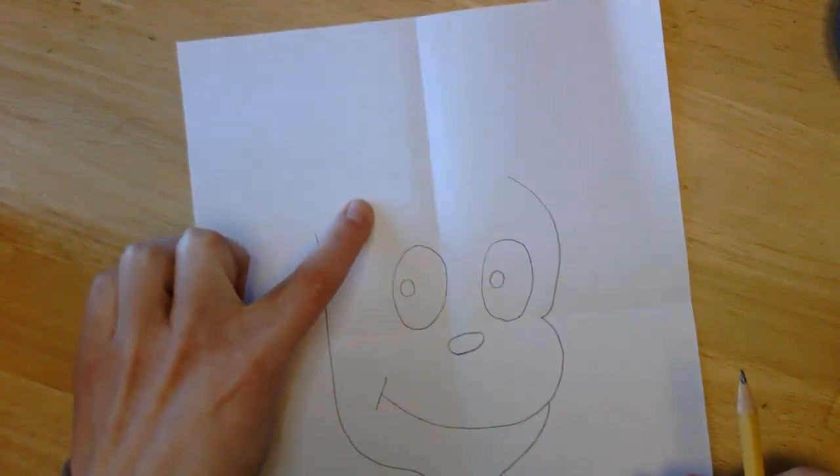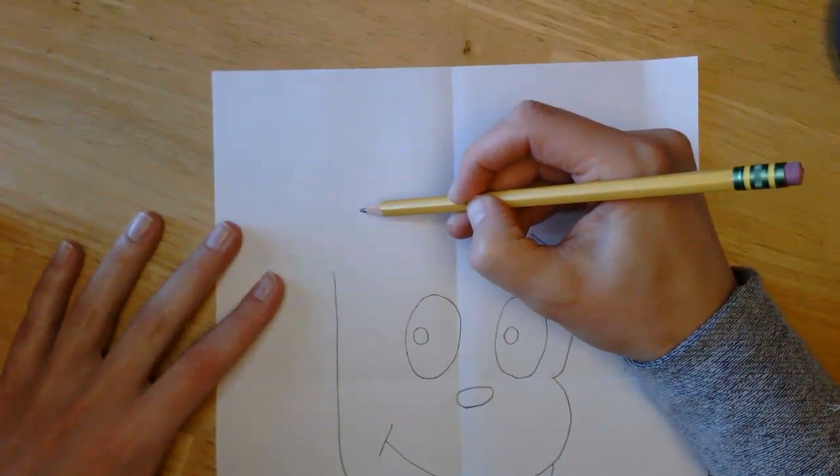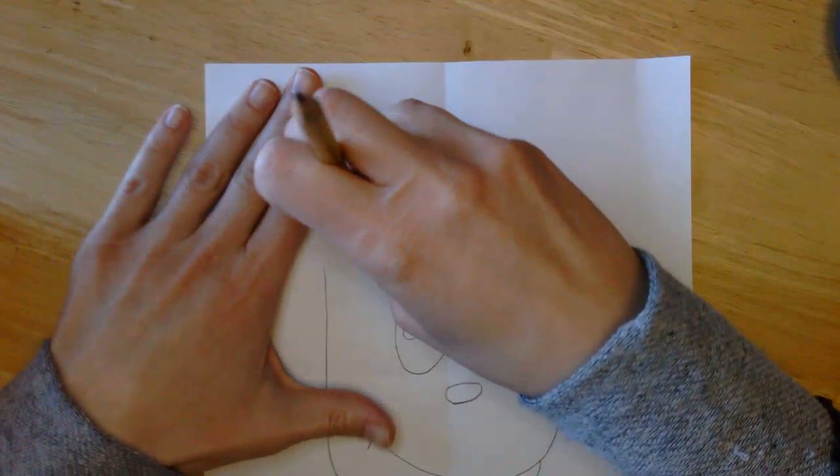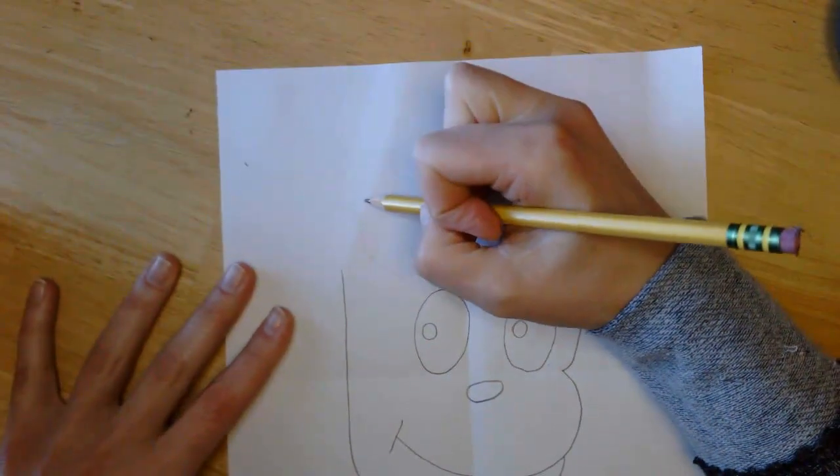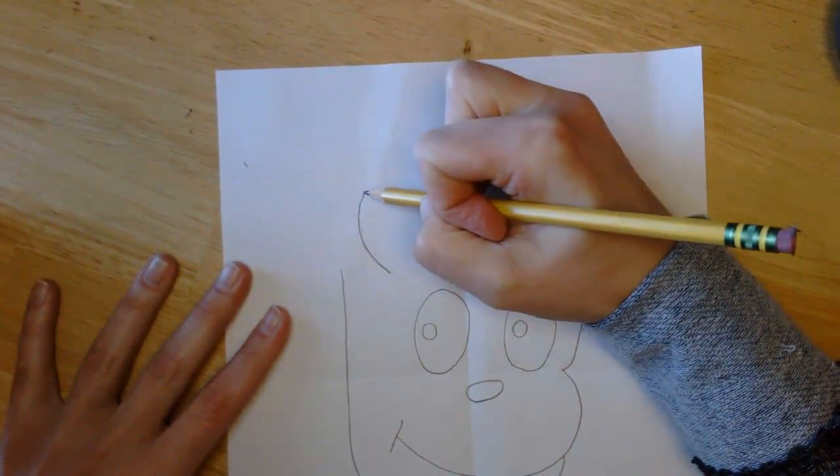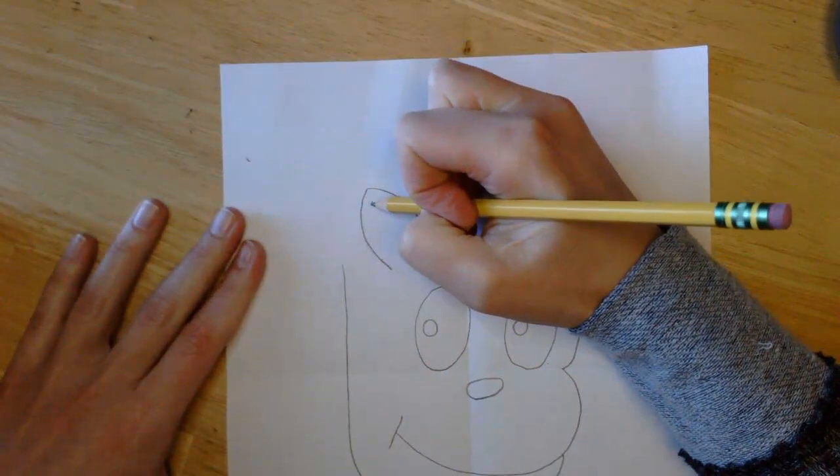Next, we're going to come up here. We're going to draw his ear. His ear is going to be a leaf shape. There we go. That's a little better. Inside, you're going to draw the same thing, a little smaller.